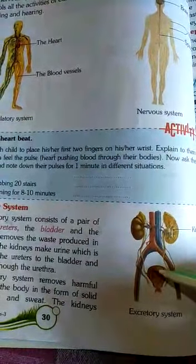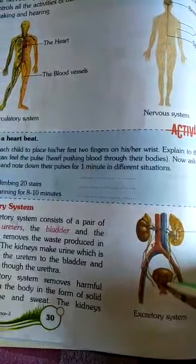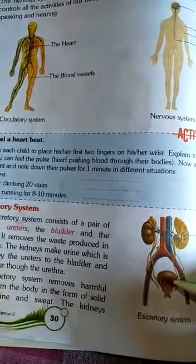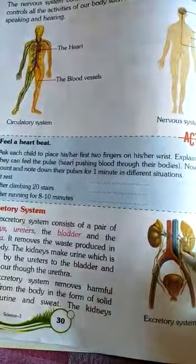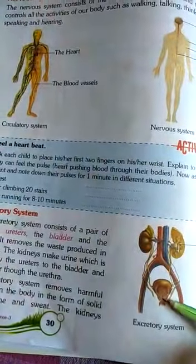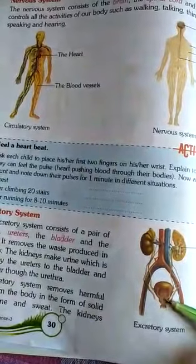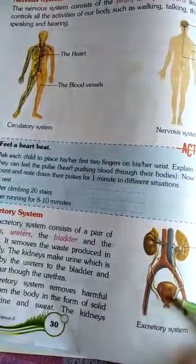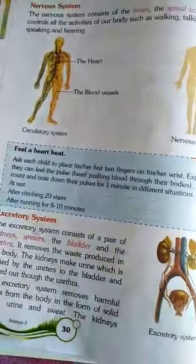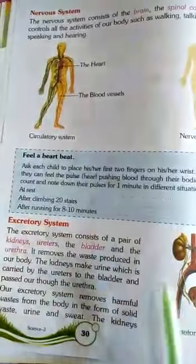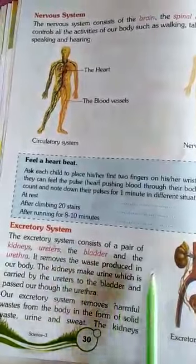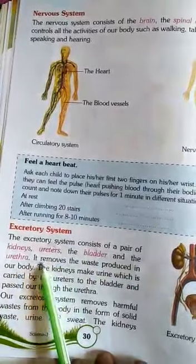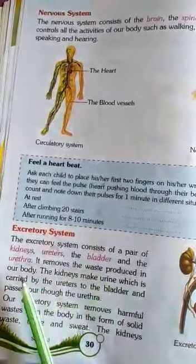The bladder is a muscular sac which stores urine coming from the kidneys. The urethra is the duct or opening where urine is released from our body. These are the four organs associated with the excretory system.